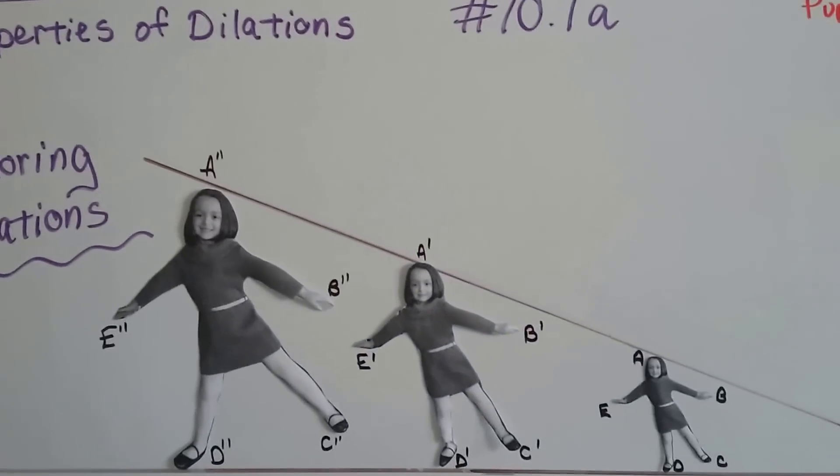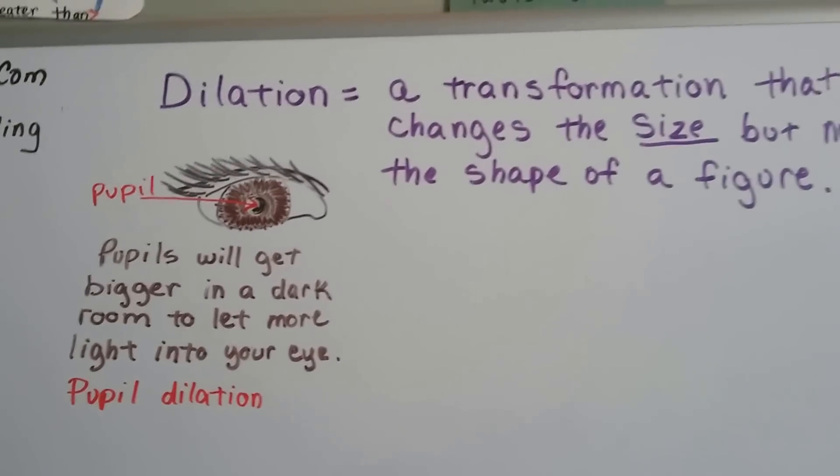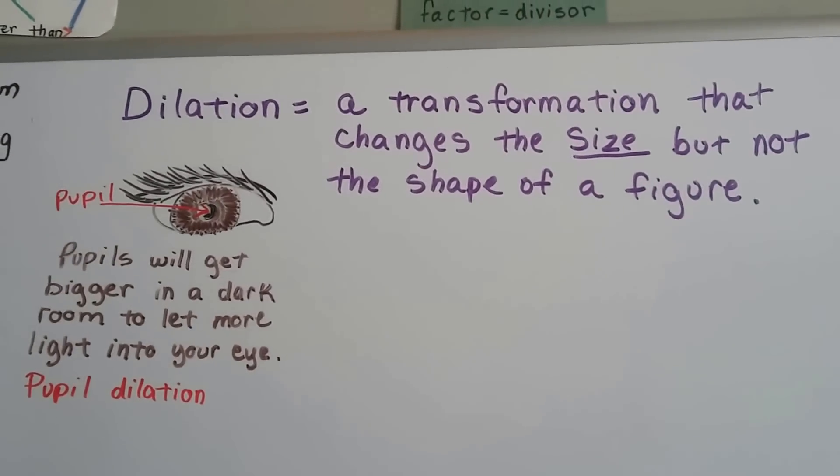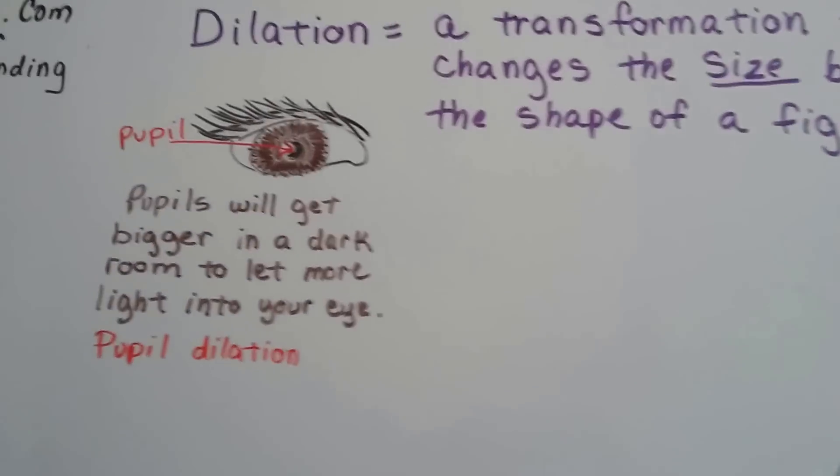Look at this. See these pictures of Emma? Those are dilations of Emma. So, what's a dilation? Well, it's a transformation that changes the size but not the shape of a figure.